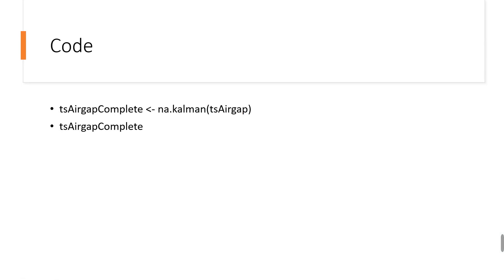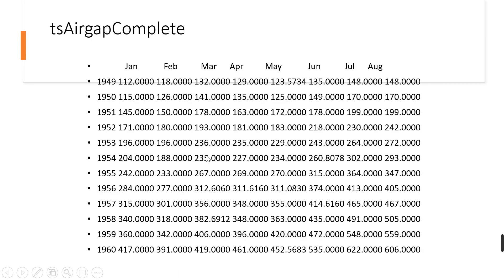And since it's seasonal data, I advise that we use a Kalman smoothing approach. So if you try to do that, then we generate this. Here we can see that there is no more missing. All the missing values have been replaced.